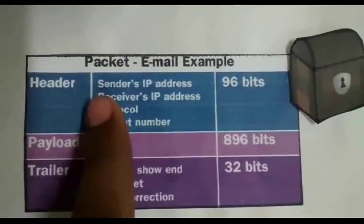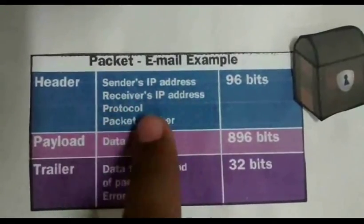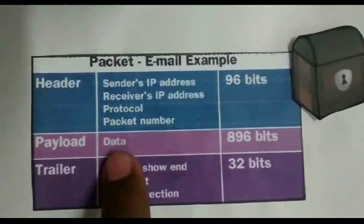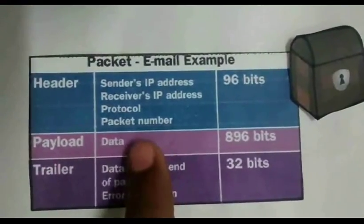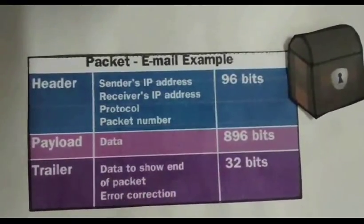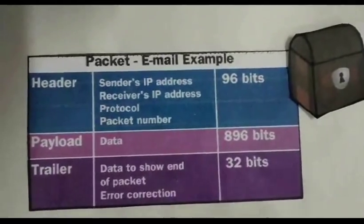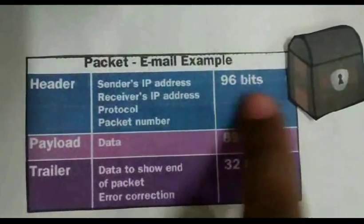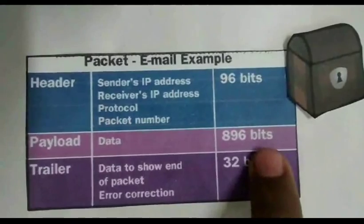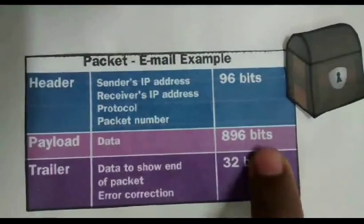A filled data packet consists of a header, a payload, and a trailer. The header consists of the sender's IP address, receiver's IP address, protocol, and packet number. The payload consists of the data which we want to send over the internet. The trailer consists of data to show the end of packet and also helps in error correction. The typical size of a header is 96 bits, the size of the payload depends on the size of our data, and the typical size of a trailer is 32 bits.